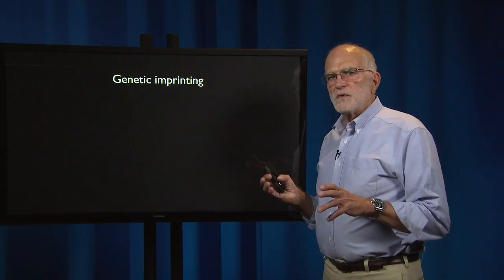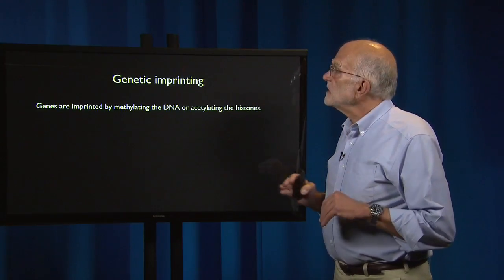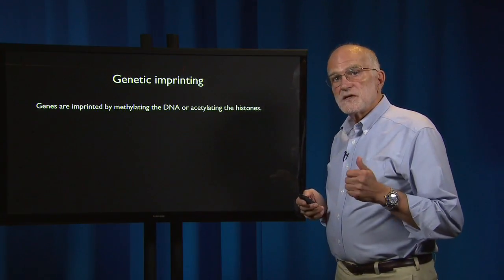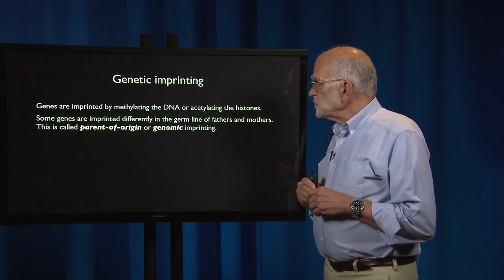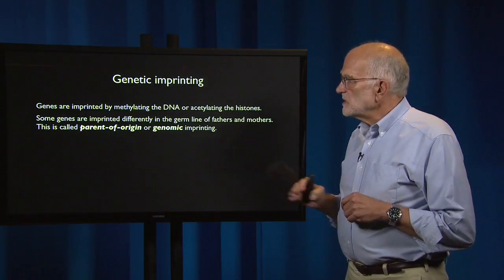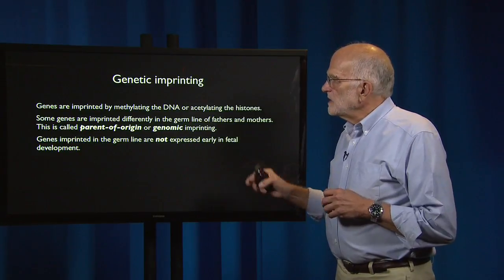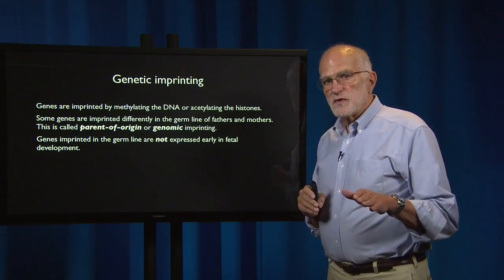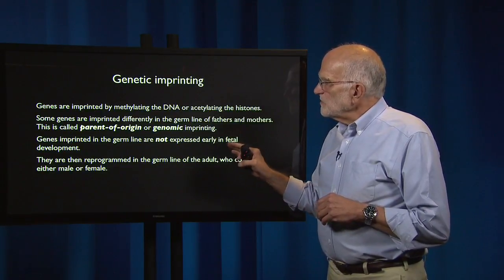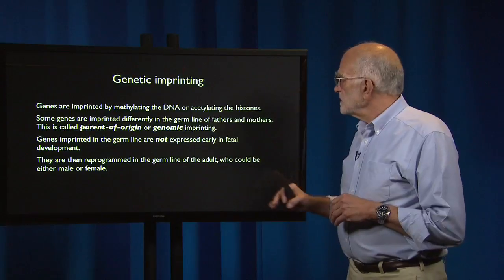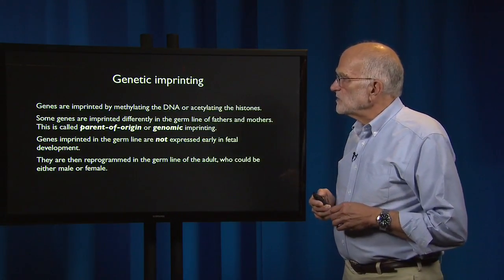This kind of control is related to genetic imprinting. Genes are imprinted or turned off by methylating the DNA or changing the acetylation pattern in histones. Some genes are imprinted differently in the germline of fathers and mothers — this is called parent-of-origin or genomic imprinting. Genes imprinted in the germline are not expressed early in fetal development, and they are then reprogrammed in the germline of the adult to be appropriate for being either a mother or a father.